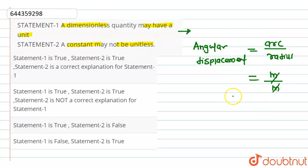Meter meter will get cancelled. It means angular displacement has dimension L0, M0, T0. It means angular displacement is a dimensionless quantity, but it has unit. The SI unit of angular displacement is radian.